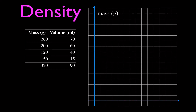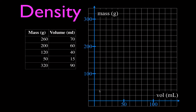We put the mass on the y-axis and the volume on the x-axis, then we divide up our axes accordingly. On the y-axis, every five squares equals 100 grams, meaning every square is 20 grams. On the x-axis, every five squares equals 10, so the scale goes 10, 20, 30, 40, 50, and then 100. Each square on the y-axis is 20 and each square on the x-axis is 10. It doesn't have to be the same on both axes, but it has to be consistent throughout each axis.